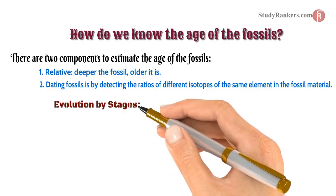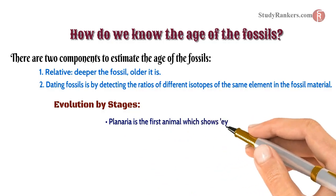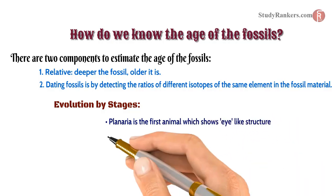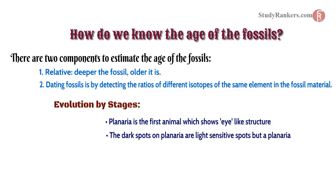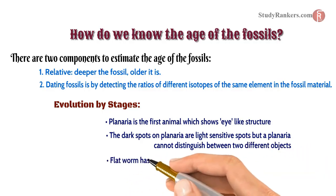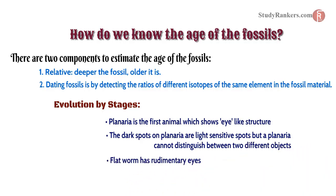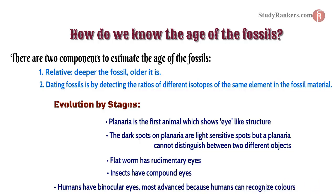Evolution by stages. Planaria is the first animal which shows an eye-like structure. The dark spots on planaria are light-sensitive spots, but planaria cannot distinguish between two different objects. Flat worms have rudimentary eyes, enough to give a fitness advantage. Insects have compound eyes. Humans have binocular eyes — the most advanced — because humans can recognize colors and have very good depth perception.